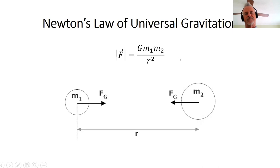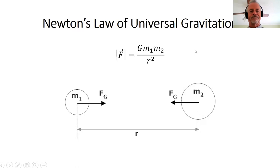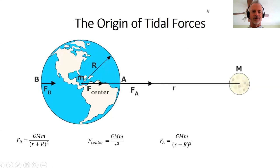We all know Newton's law of universal gravitation, which I'm showing here. If we have a pair of masses, M1 and M2, and their centers are separated by some distance r, there are equal gravitational forces that act on those two objects. The thing we want to investigate today is tidal forces. I'll explain how the tidal force is defined, but let's look at the physical origin of the tidal forces first.